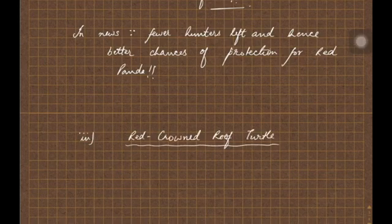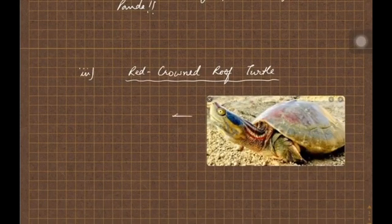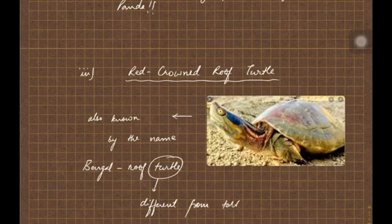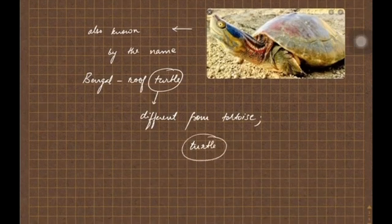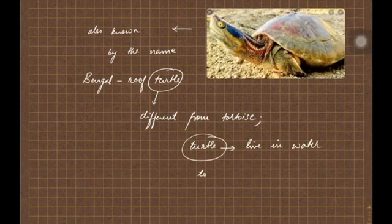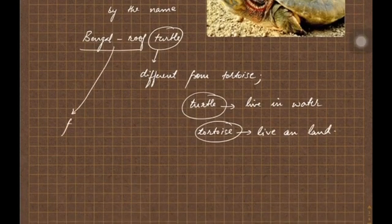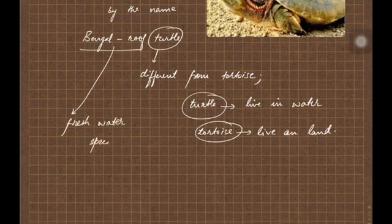The next species is Red Crowned Roof Turtle. This Red Crowned Roof Turtle is also known by the name Bengal Roof Turtle. Turtle is different from tortoise because turtle lives in water, whereas tortoise is a land-based animal. This Bengal Roof Turtle is a freshwater species of turtle.